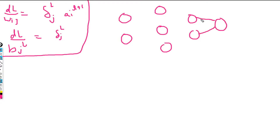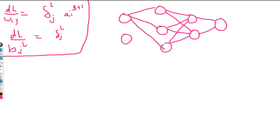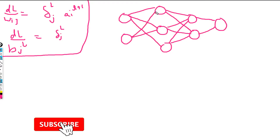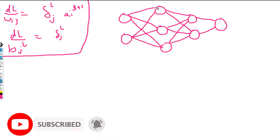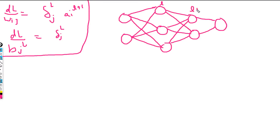In the last video we saw how to update the weights on the output part. Now let's label the layers: this is layer l, this is l+1, this is l−1, and this is capital L. What I'm going to find is the weight updates for layer l.